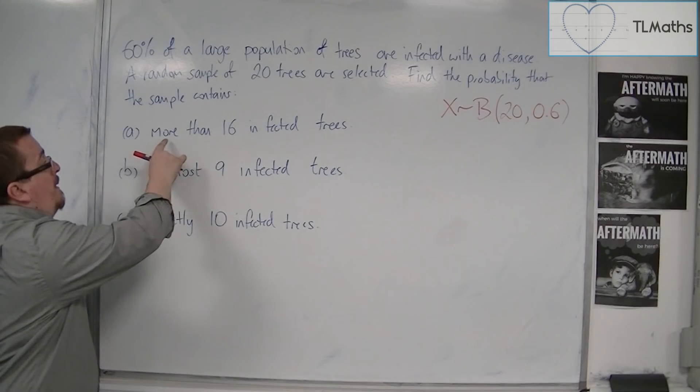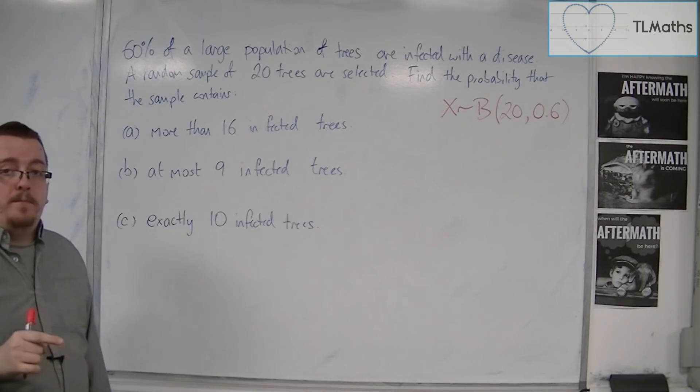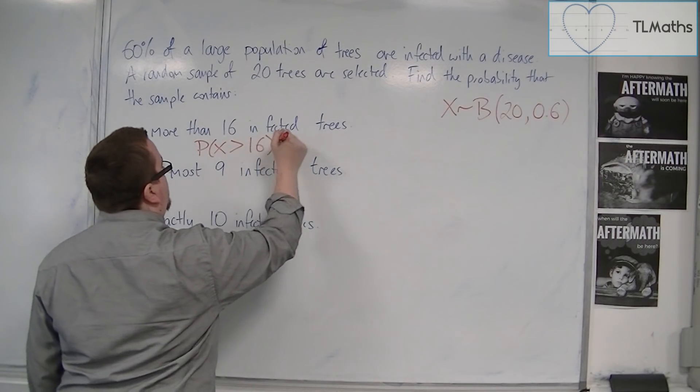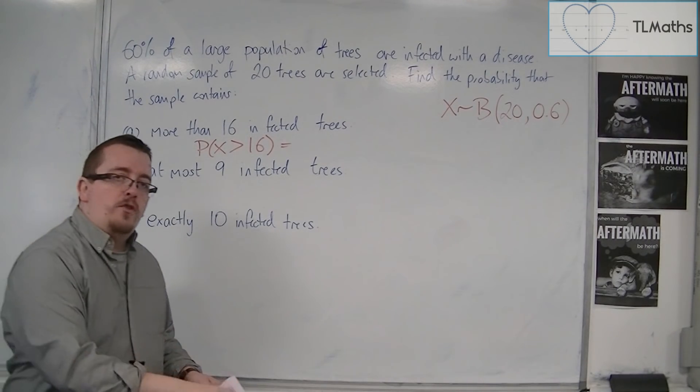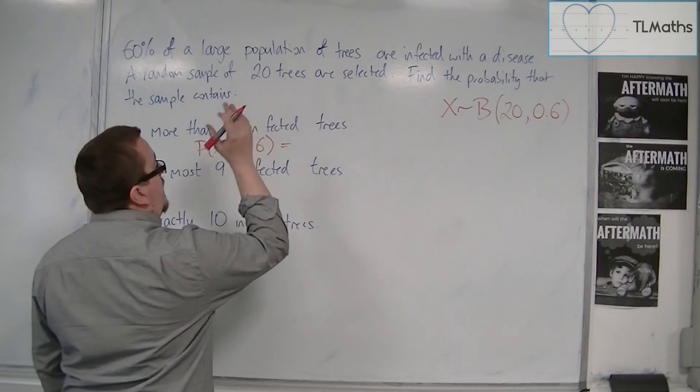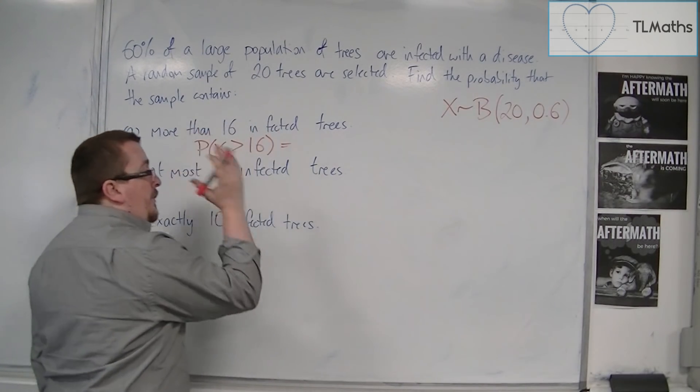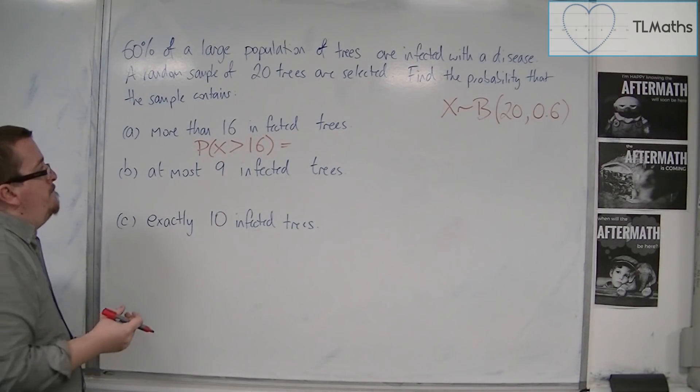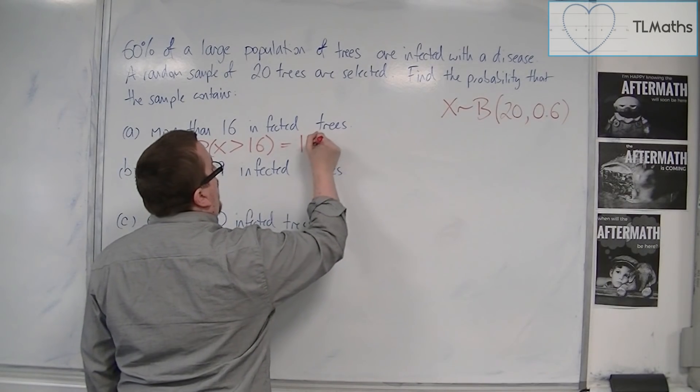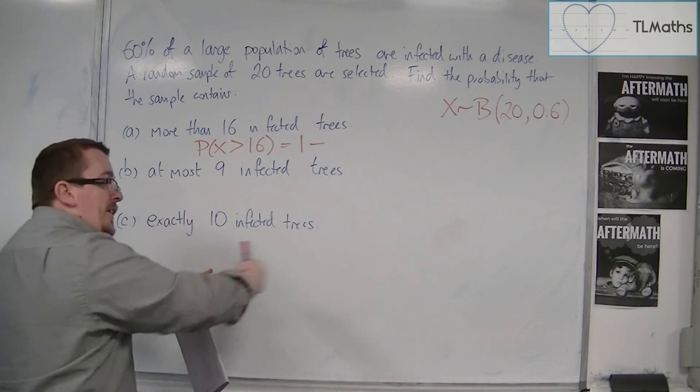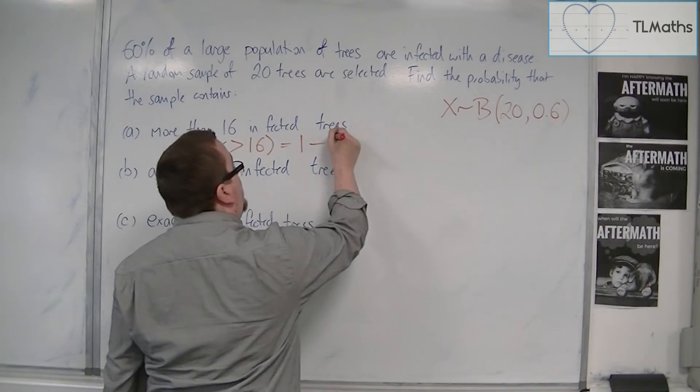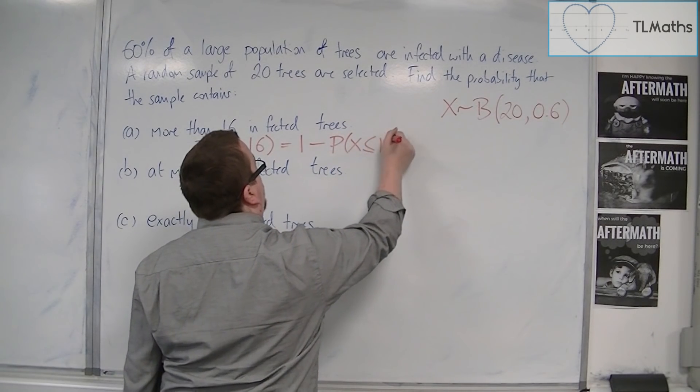If we want to find the probability of more than 16 being infected, we want the probability of X being greater than 16. Now, I can't work that out straight from the tables. I've got to use less than or equals to. If I want greater than 16, that's 17 and above. So what I can do is I can think of it as, if I want 17 and above, I don't want 16 and below. So I can do one take away the probability of X being less than or equal to 16.